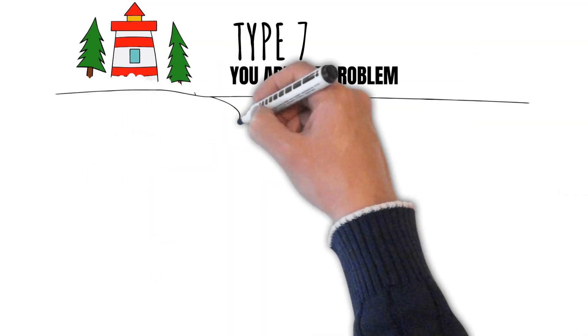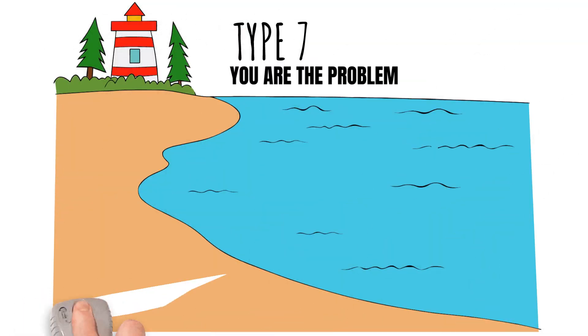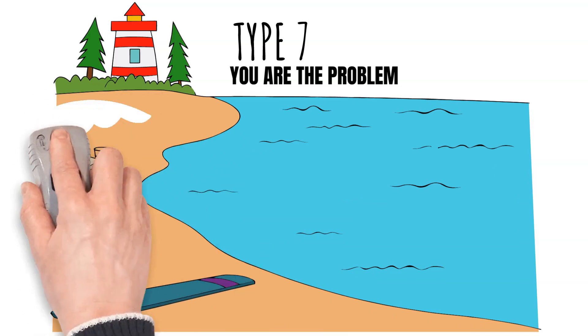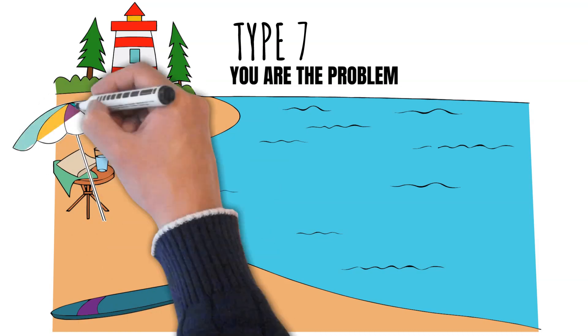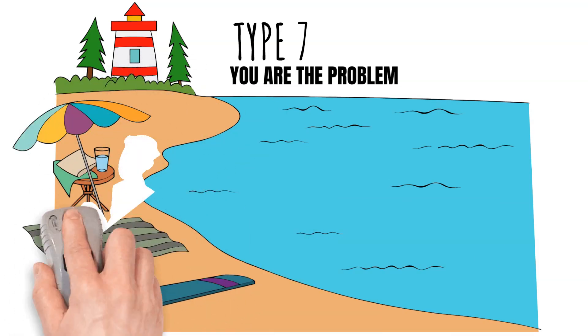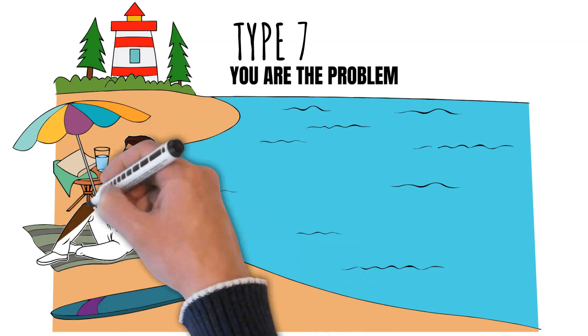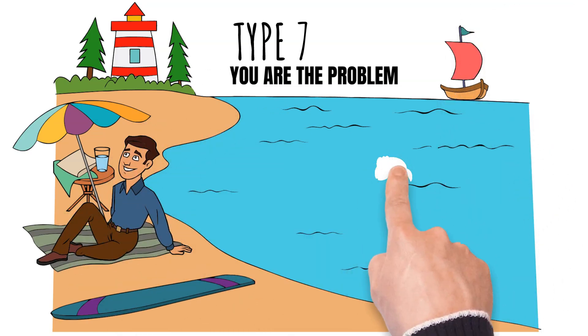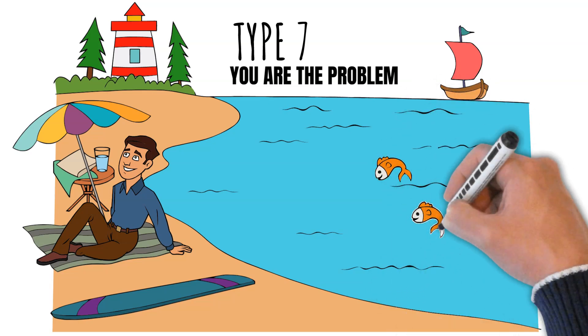7s are often referred to as the Enthusiast, and are typically characterized by their energetic, spontaneous, and adventurous nature. While there are many positive qualities associated with Type 7s, like all Enneagram types, they have certain patterns of behavior that could sometimes lead to misunderstandings or frustrations for others. Here are some reasons why people might get frustrated with Enneagram Type 7 individuals.